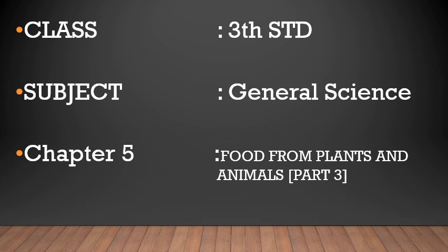In Part 1 and Part 2 of the lesson, we learned about different food materials we get from plants — food from roots, seeds, leaves, and stems — as well as dairy products and animal products. We also saw how much protein, carbohydrates, and fats our body requires, and in the second video we learned about vitamins A, B, C, and D.